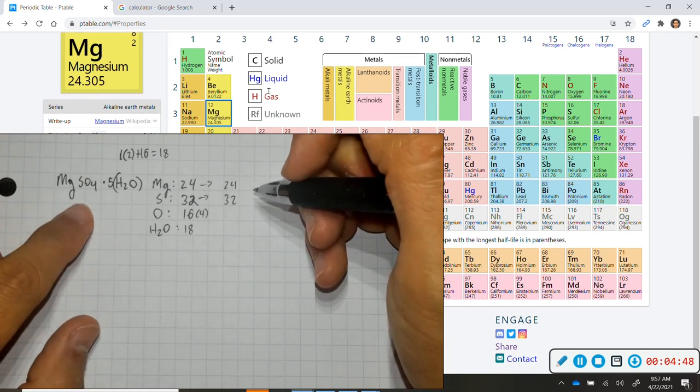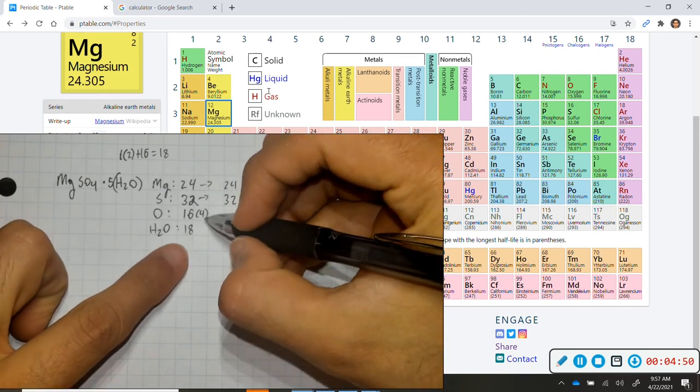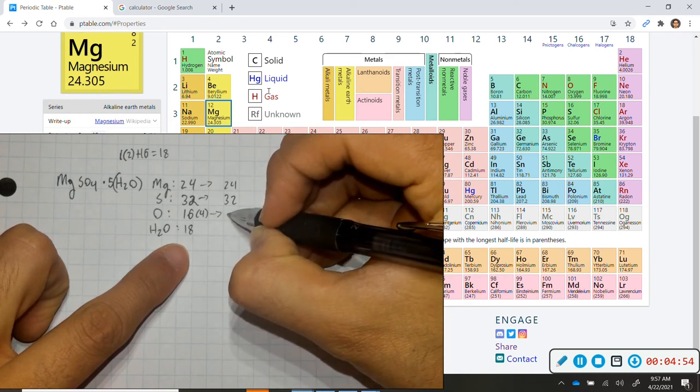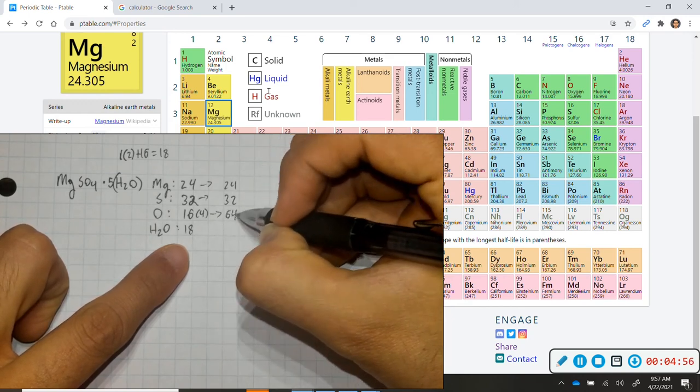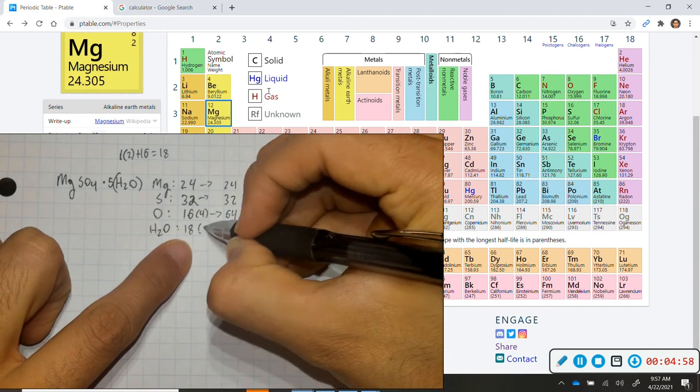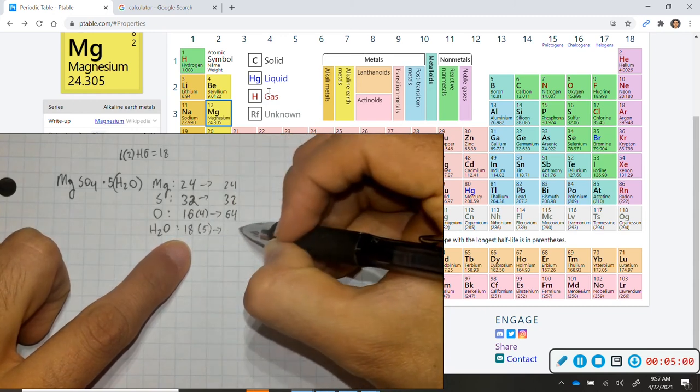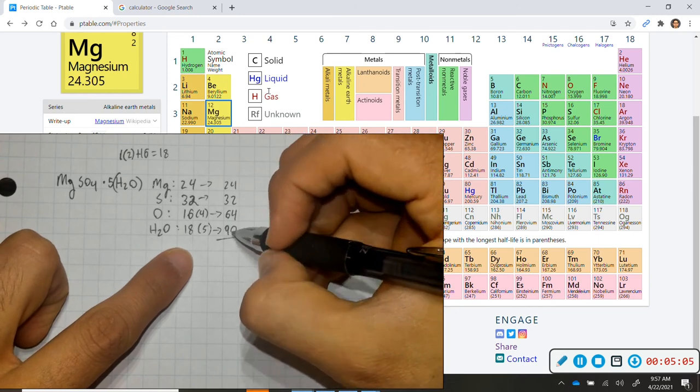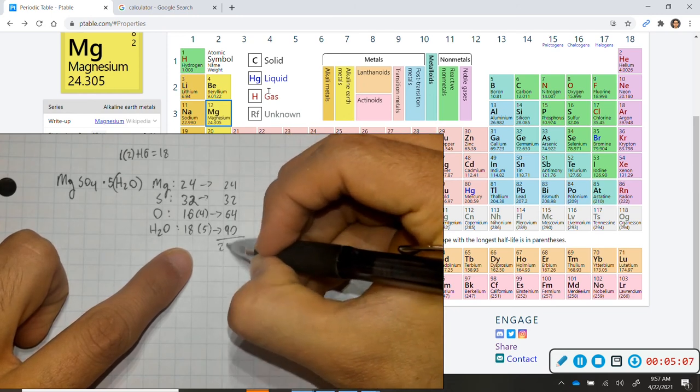For instance, sulfates, we always consider it together. So in this situation, we have 16 times 4, which would be 64. And then we have 18 times 5, which will be 90. And if we add all of these items together, we get a mass of 210. And that's pretty much how you solve for the formula mass of these three items.